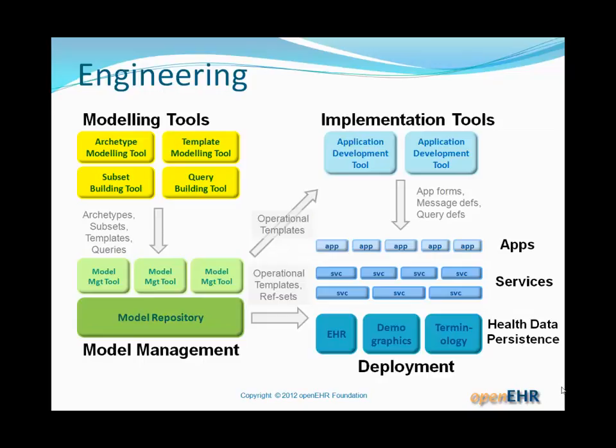The new tools on the left include: tools for modelling — building archetypes, templates, building subsets, building queries based on those models. Also technology for storing models — and not just storing, but interrogating them: querying intelligently, being able to locate models that do certain things, knowing whether to build a new model or reuse an existing one, plus all kinds of publishing functions. This is new technology, and it radically changes what's on the right-hand side, because all levels of the technology produced — including application building tools — are essentially programmed by operational templates and terminology refsets coming from the model definition environment on the left.